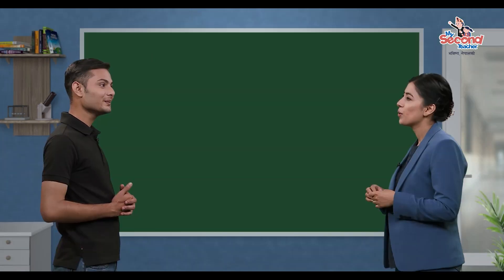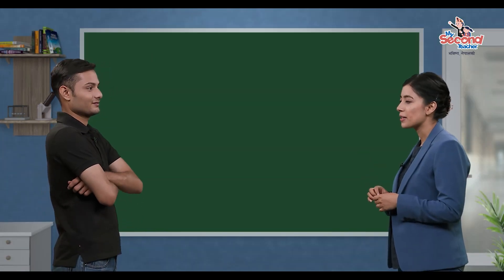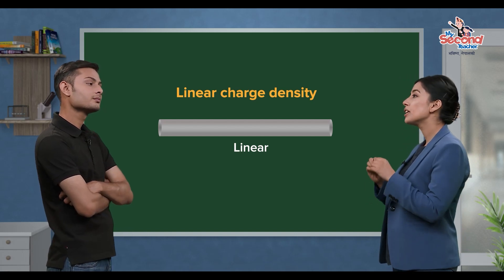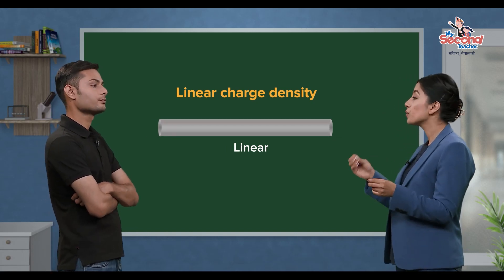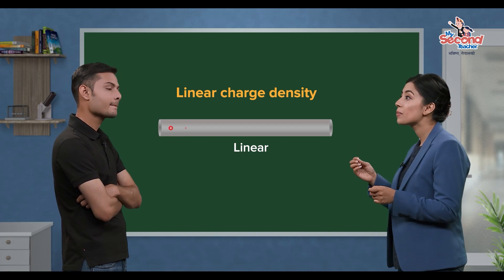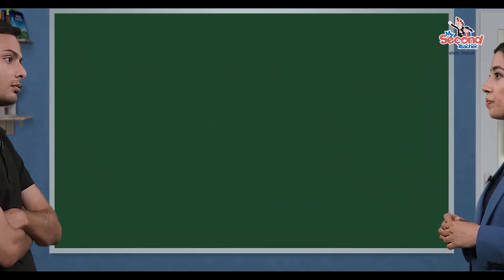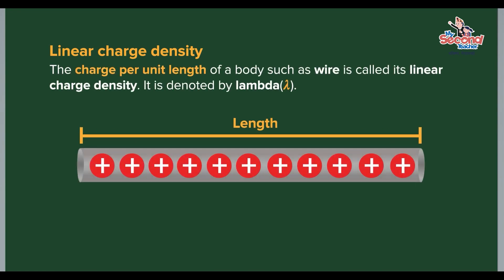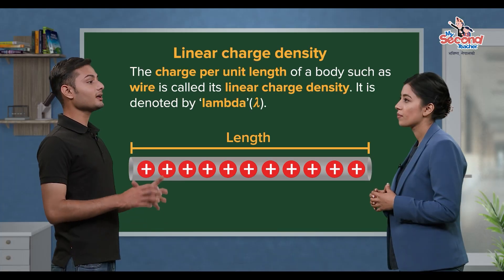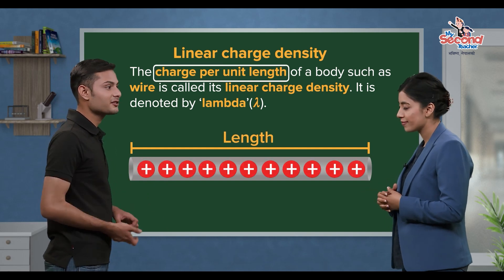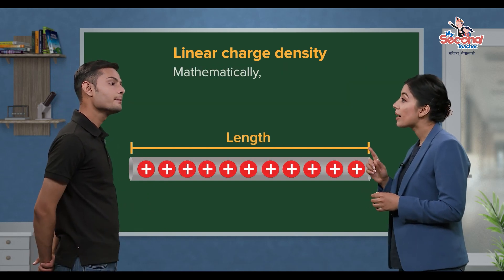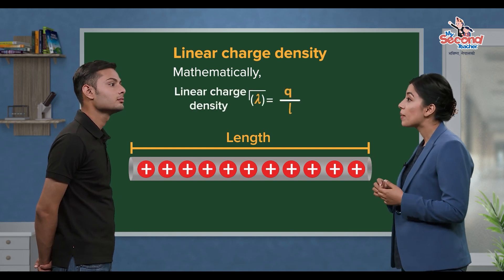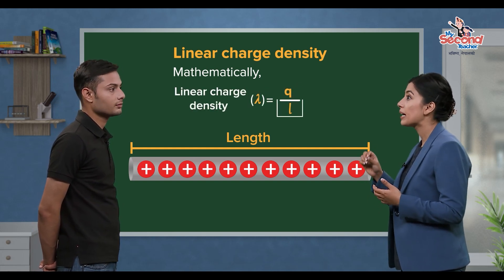The amount of charge in the length of a body, such as a wire, is called its linear charge density. It is denoted by lambda. Linear charge density means charge per unit length. Mathematically, linear charge density lambda equals q divided by L.